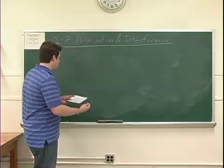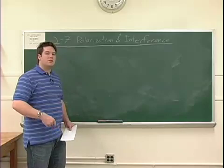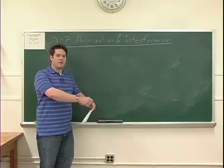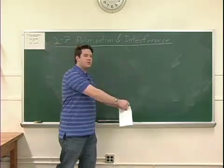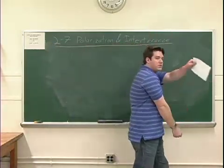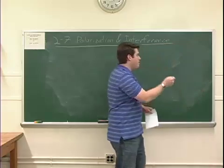You'll recall that light is a transverse wave, so it has electric and magnetic fields oscillating perpendicular to the direction of travel. So as light travels in this direction, the electric and magnetic fields oscillate up and down and back and forth.